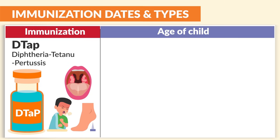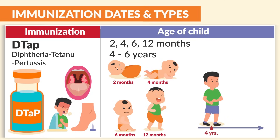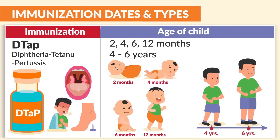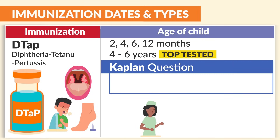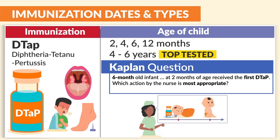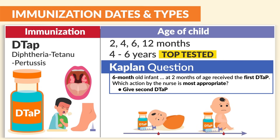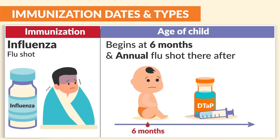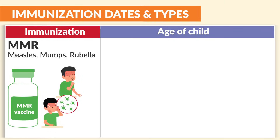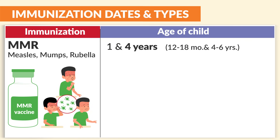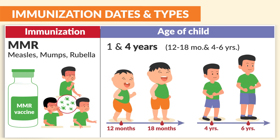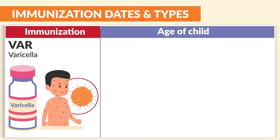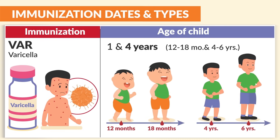DTaP is also given at 2, 4, 6, and 12 months, and 4 to 6 years — this one is top tested because it's given so frequently. Kaplan mentions: a 6-month-old infant who at 2 months received the first DTaP — the most appropriate action is to give the second DTaP. Influenza (the flu shot) begins at 6 months and is given annually thereafter. MMR (measles, mumps, and rubella) is given at 1 and 4 years old, or the age range of 12 to 18 months and 4 to 6 years — the most tested was 1 and 4 years. Varicella (VAR) is also given at 1 and 4 years, as is hepatitis A.